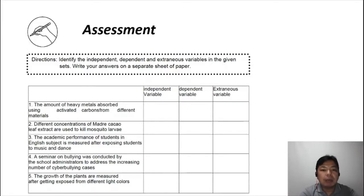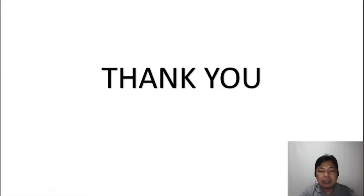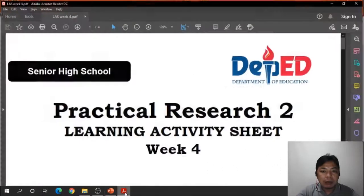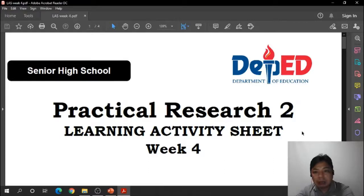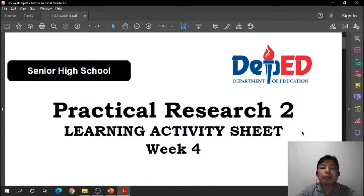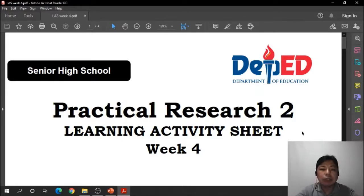That ends our discussion for variables in research. Before we end, let's look at the learning activity sheet for week 4 since many are asking how to do it. All answers should be written on the learning activity sheet itself — not on a separate sheet of paper. For the module, write on a separate sheet, but for the learning activity sheet, you can answer directly on the LAS. Use a separate sheet only if your answers don't fit.